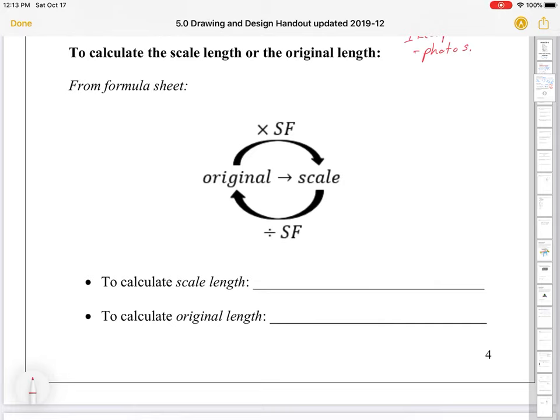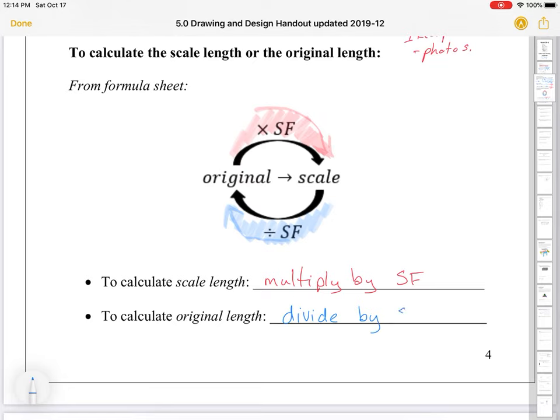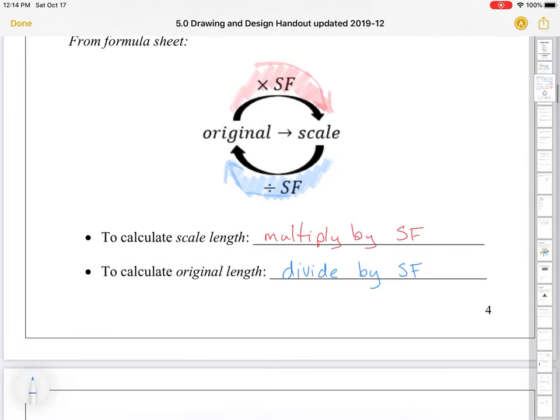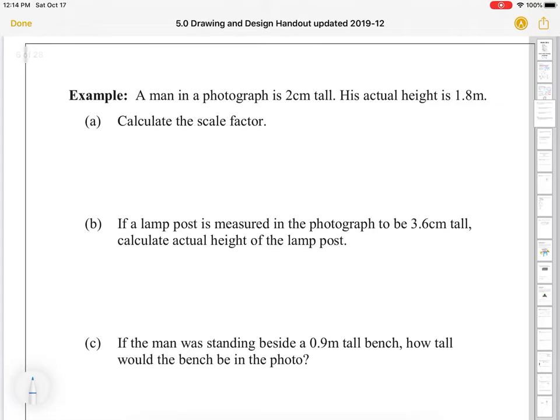To calculate scale length or the original length, we have this convenient little model. To calculate scale length, you multiply by your scale factor. If we're going from original to scale. If you want to go from scale to original, you're going to divide by scale factor. So you're using scale factor everywhere. It's just whether or not you're going to divide or multiply.